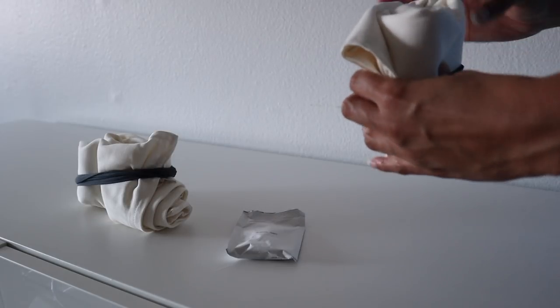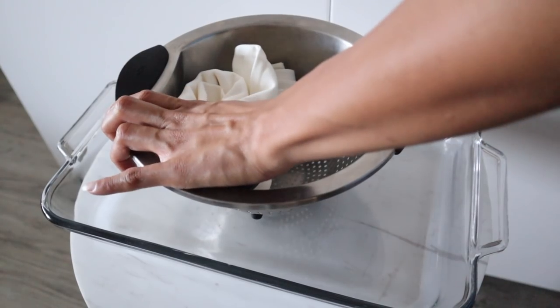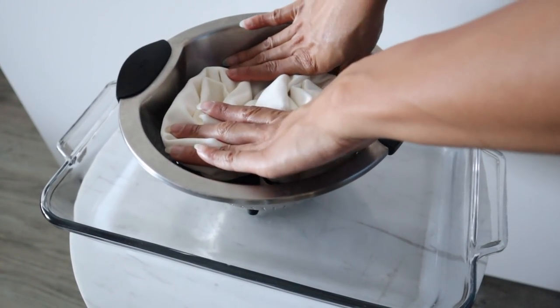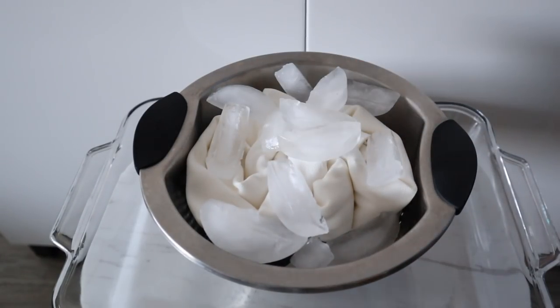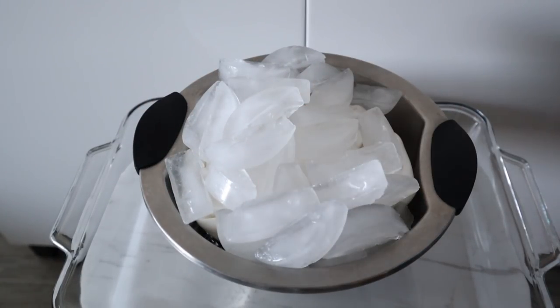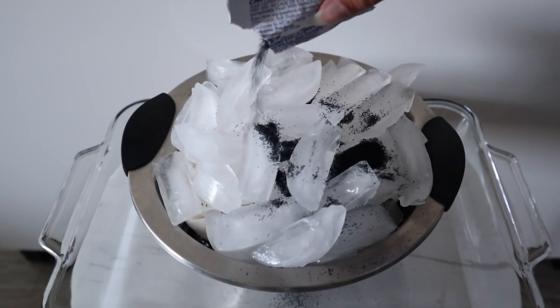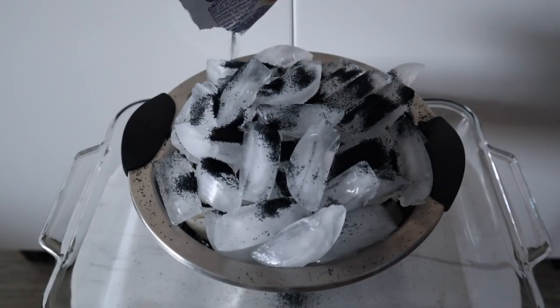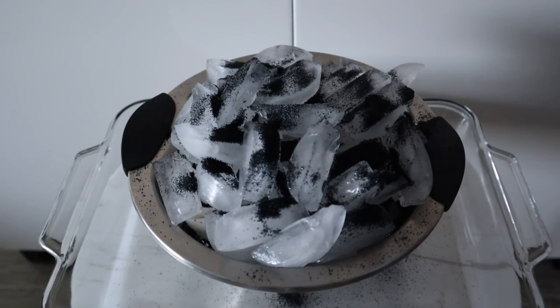I ended up using my stainless steel pasta strainer instead. Make sure you use stainless steel. Put the pillowcases in there, cover with ice, and sprinkle the powdered fabric dye on top. We're actually tie-dyeing these pillows using ice. I saw this online and didn't think it would work, but it worked amazing. Just sit back and let the ice melt for a few hours.